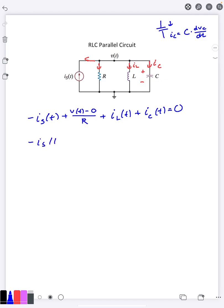So what I can go ahead and do is I can replace my iC of t with C dv/dt. So what I've done is I've taken this iC, this current through the capacitor, and I've written it in terms of my unknown variable v of t.